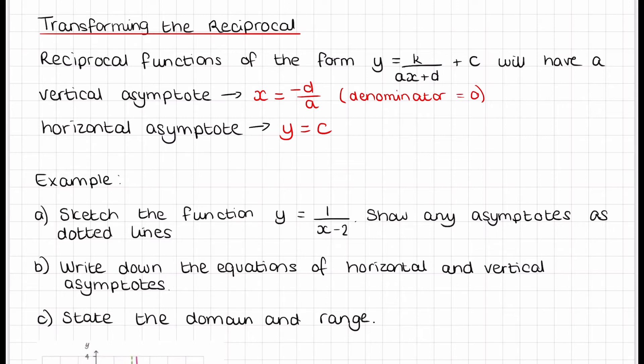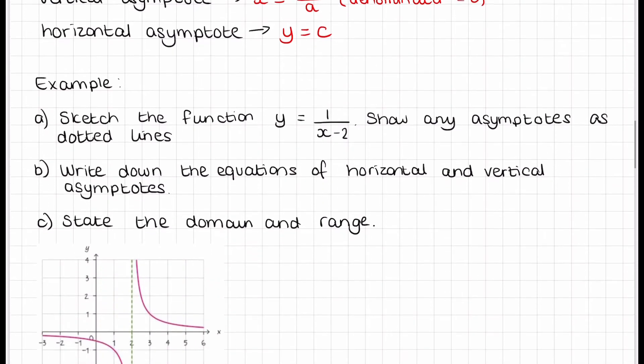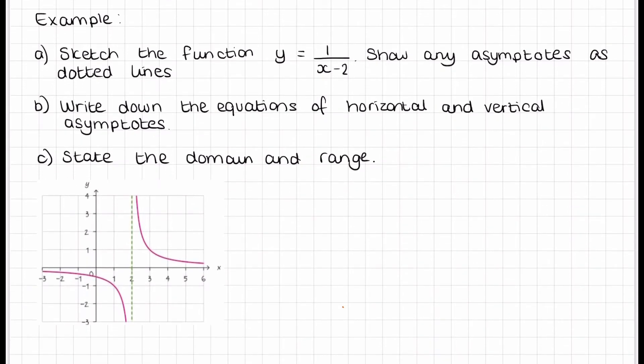Got an example here. Sketch the function y equals 1 on x minus 2. Show any asymptotes as dotted lines. I would just recommend graphing it on your calculator and then drawing a sketch from there. You see here I've got that green dotted line down the middle. That's where the vertical asymptote is. Those lines here vertically will never ever reach that line. There is also one on the x-axis but obviously as it's the x-axis that's why you can't see a dotted line there.